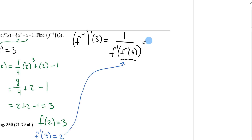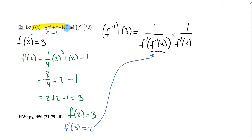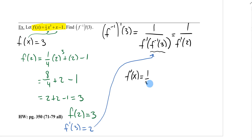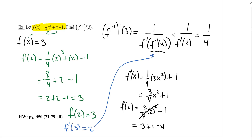Proceeding with the formula: f inverse prime of three equals one over f prime of two. Taking the derivative of f(x) = x³/4 + x − 1 using the power rule gives f prime of x equals three-fourths x squared plus one. Plugging in x equals two: three-fourths times four plus one equals three plus one equals four. So f prime of two equals four, and the final answer is one over four.